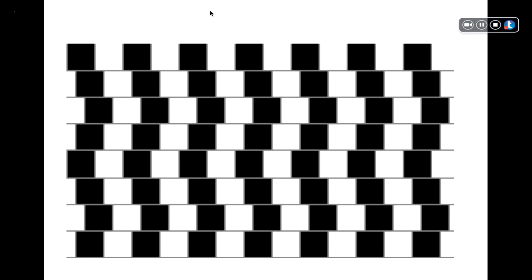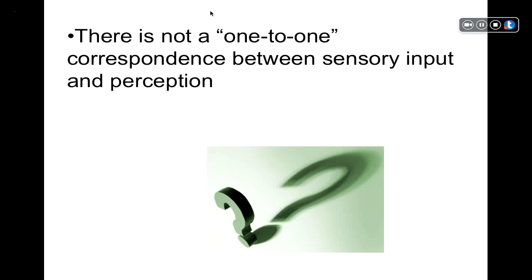Take a look at this image. What do you see? Do the lines appear to be parallel, or do they appear to be not parallel? The answer is they appear to be not parallel. However, we know, since it's a visual illusion, the lines are parallel. The sensory stimulus we're processing is such that the lines are parallel, yet we perceive the image as having lines that are not parallel.